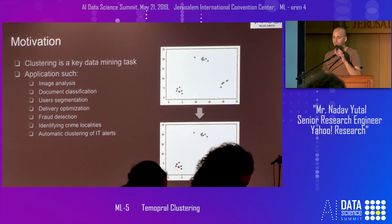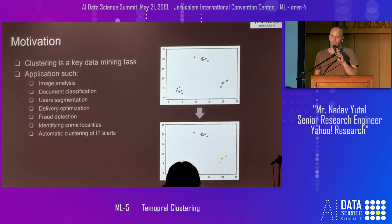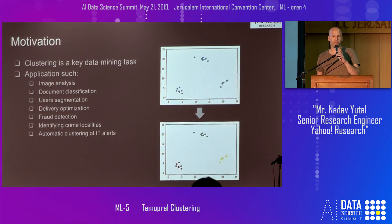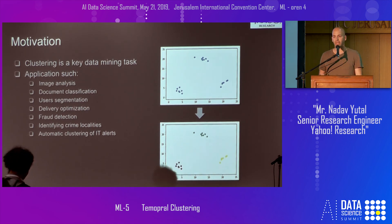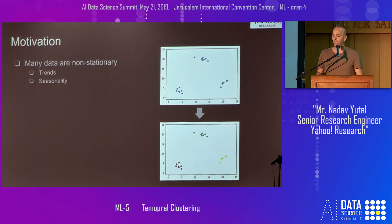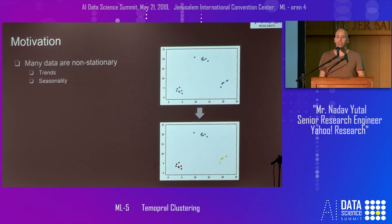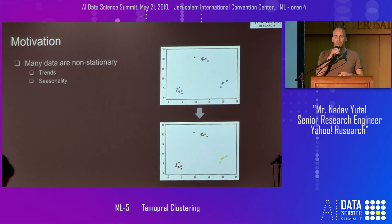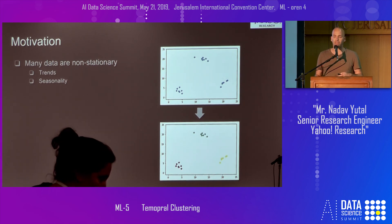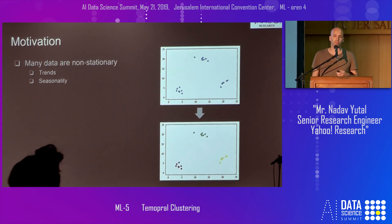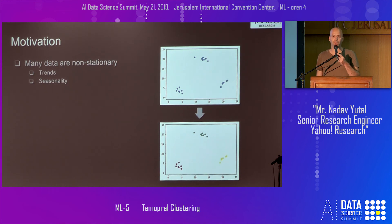Let's start with the motivation. The ability to cluster data into groups that contain similar objects is very critical for a lot of applications in a lot of fields. And in many cases, the data is non-stationary. It might have trends, it might contain seasonality — temporal data, for example, amount of purchases over weekends.